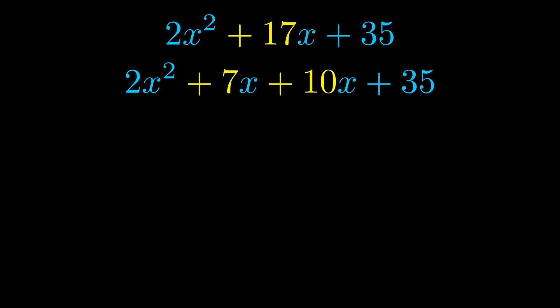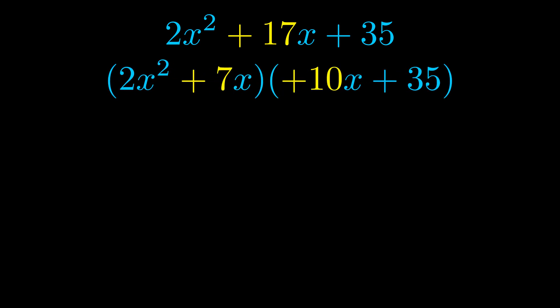Once we've done this we go ahead and we put parentheses around the first term and the last term. And we do that so that we can take the greatest common factor out of both terms. We can see the greatest common factor is now outside in green. Notice also how what remains inside of the parentheses is the same in both cases.